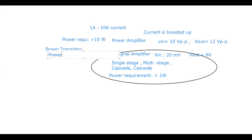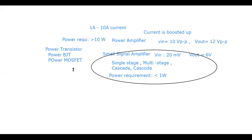There is a requirement for special transistors meant only for power amplifiers, called power transistors. These fall into two categories: power BJT and power MOSFET. These have an extremely high current rating and slightly higher voltage rating. Also, heat sinks are required for power transistors.